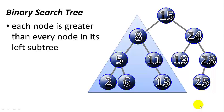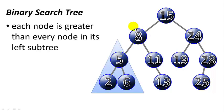In a binary search tree, each node is greater than every node in its left subtree. For example, 15 is greater than every node in the left subtree. Node 8 is greater than every node in its left subtree. Node 5 is greater than the 2 in its left subtree. Node 24 is greater than 19 in its left subtree, and so on.